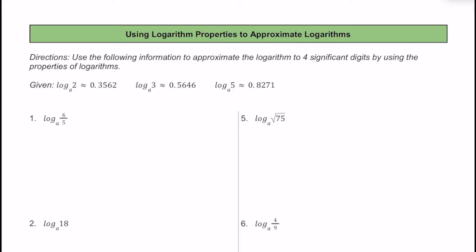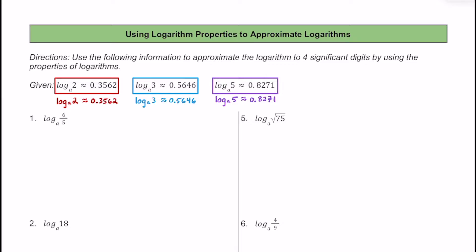In this video, let's practice using some different properties of logarithms so that we can approximate some expressions together. We're given that log base a of 2 is approximately equal to 0.3562, log base a of 3 is about 0.5646, and log base a of 5 is about 0.8271. We're going to use these three bits of information along with some different properties of logarithms to approximate the expressions below. No matter what, we're going to try to get each of these expressions to say log base a of 2, log base a of 3, or log base a of 5 in them.